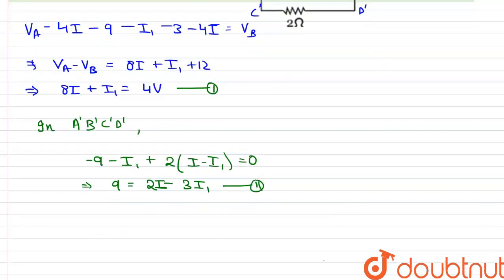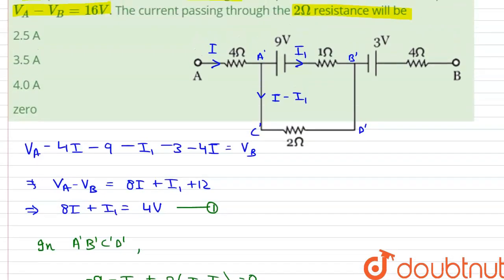we find out that value of I minus I1 is equals to 3.5 Ampere. Therefore, on this calculation, we can say that the answer is option B.